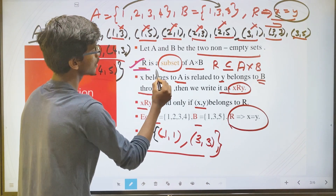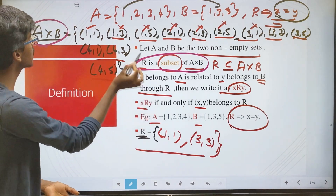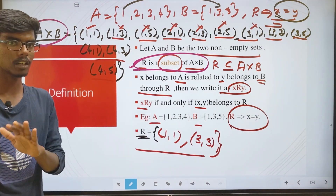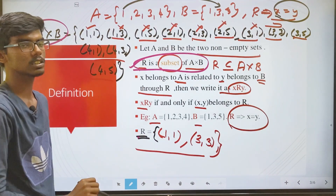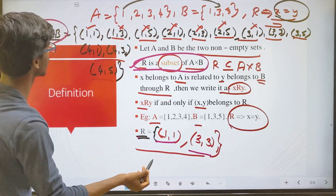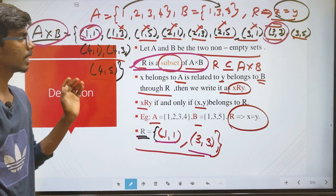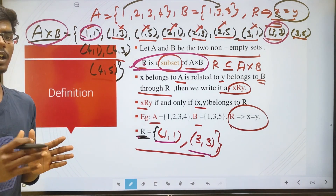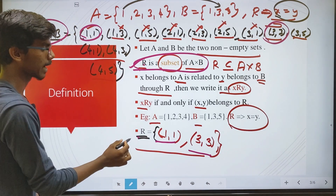R is the subset of A cross B. If you have a relation set, and A cross B set is here, these elements are the subset of A cross B. That means the relation is the subset of the Cartesian product. The relation set R = {(1,1), (3,3)} is the subset of A cross B. That is R is the subset of A cross B. The condition x equal to y gives us that relation set.